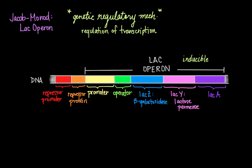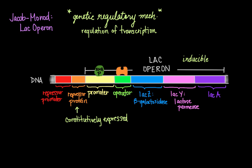When glucose is readily available to the cell, the repressor protein is constitutively expressed, meaning it is transcribed at baseline by default. This regulatory protein binds to the LAC operator, which interferes with and represses the binding of RNA polymerase to the LAC promoter. This prevents and represses the transcription of the genes for lactose metabolism.